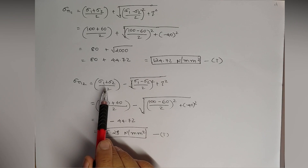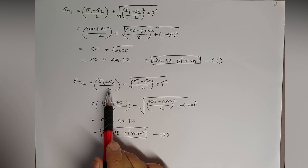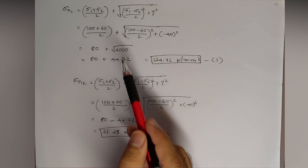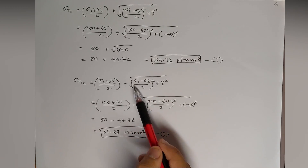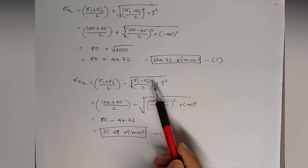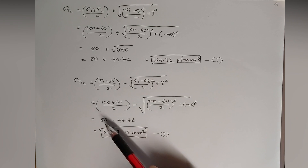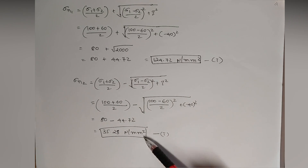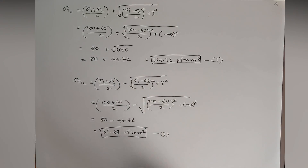For sigma n2, the formula is the same except the square root term is subtracted: σn2 = (σ1 + σ2)/2 − √[((σ1 − σ2)/2)² + τ²]. The answer is 35.28 Newton per mm square, also tensile because it is positive.